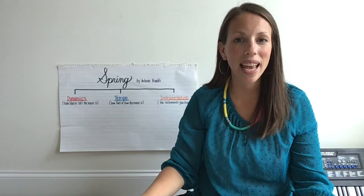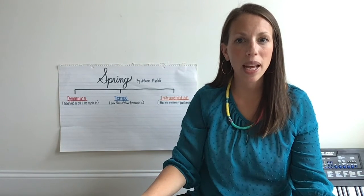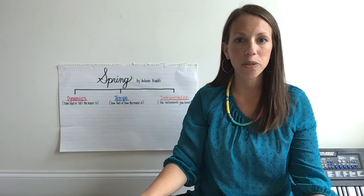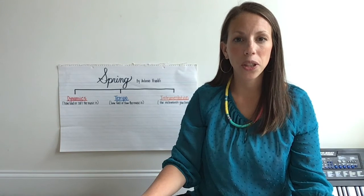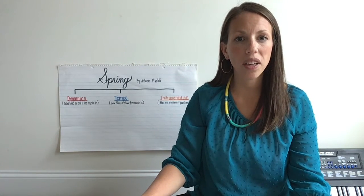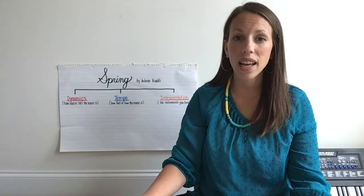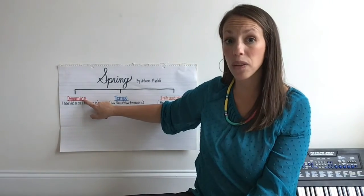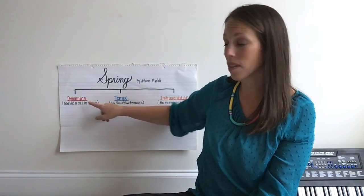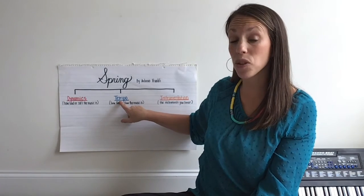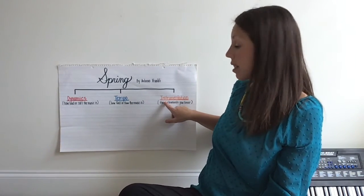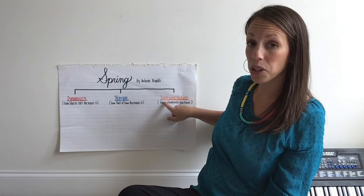Today you are going to analyze Movement One of Spring by completing an activity in Seesaw. You can access our Seesaw classroom by following the directions in the lesson plans. You are going to listen to Movement One of Spring again, and while you are listening, I want you to listen for the dynamics — how loud or soft the music is — the tempo — how fast or slow the music goes — and the instrumentation. What instruments do you hear?